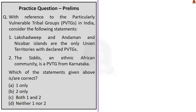Next question: With reference to Particularly Vulnerable Tribal Groups in India, consider the following statements. First: Lakshadweep and Andaman and Nicobar are the only union territories with declared PVTGs. Second: the Siddhi, an ethnic African community, is a PVTG from Karnataka. First statement is incorrect — only the union territory of Andaman and Nicobar Islands has PVTGs; Lakshadweep does not have any declared PVTGs. Some PVTGs in Andaman and Nicobar are Jarawa, Onge, and Sentinelese. Second statement is also incorrect — Siddhis are declared as PVTG only in Gujarat, not in Karnataka, even though they are spread along the coasts of Karnataka, Gujarat, Maharashtra, and Andhra Pradesh. The answer is Option D: neither one nor two.